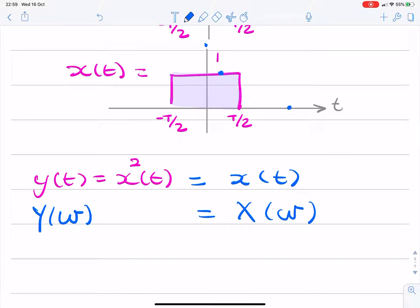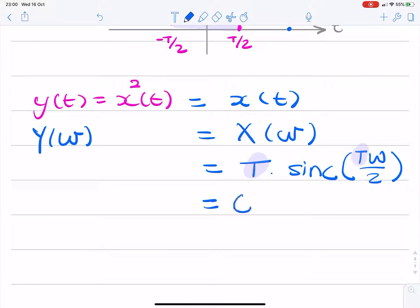And we can say this is simply going to be a sinc function, T times sinc T omega over 2, because that's the pair that's given to us in the question. And T is also given to us in the question. So the final answer is simply 6 sinc 6 omega over 2, or you could simplify that to sinc 3 omega.